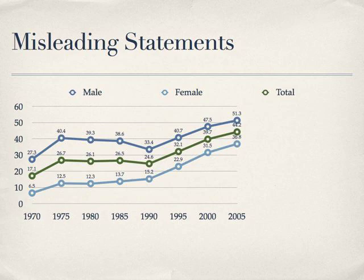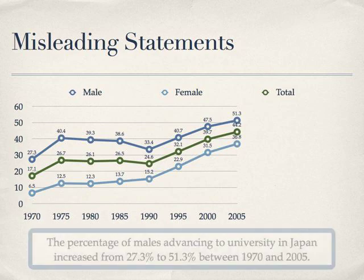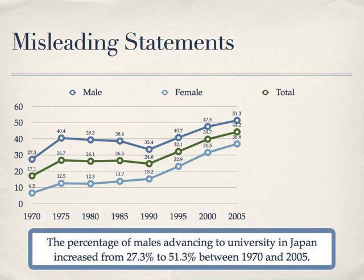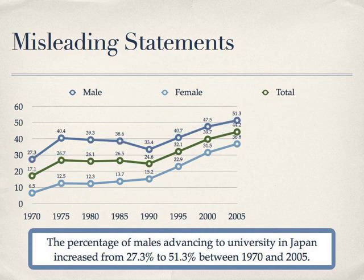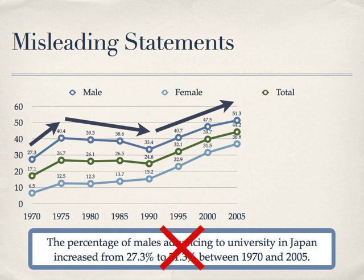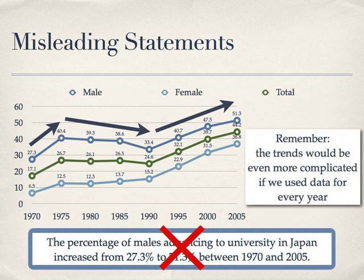Second, let's look at examples of misleading statements about your graphs, again using figure 1. Take, for example, this statement: 'The percentage of males advancing to university in Japan increased from 27.3% to 51.3% between 1970 and 2005.' This may be considered misleading because it could imply a continuous rise in numbers. Actually, the pattern is: rise to 1975, fall to 1990, and then rise again to 2005. So this statement is not ideal. And remember, the trends would be even more complicated if we used data for every year in this graph.